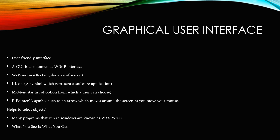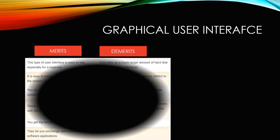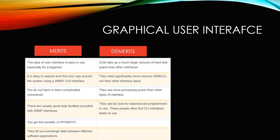We also refer to graphical user interface as 'What You See Is What You Get.' Coming to advantages of graphical user interface: since we have WIMP components, it is very easy to use even for beginners. There is no need to memorize commands because it benefits from WIMP interfaces. But it occupies more memory as well as more processing power, so it is slower than command-line interface.